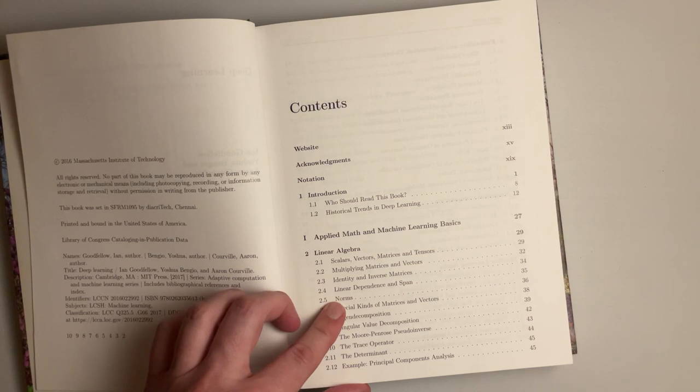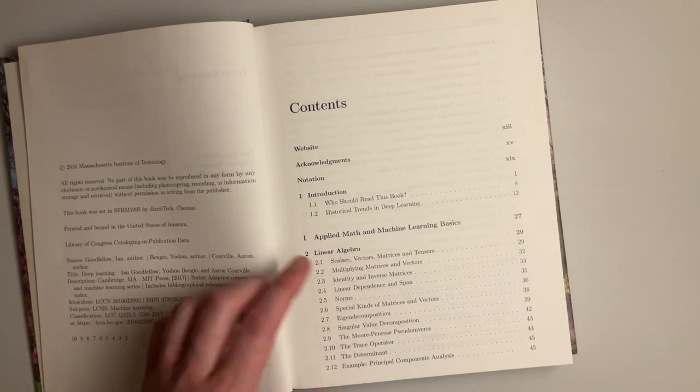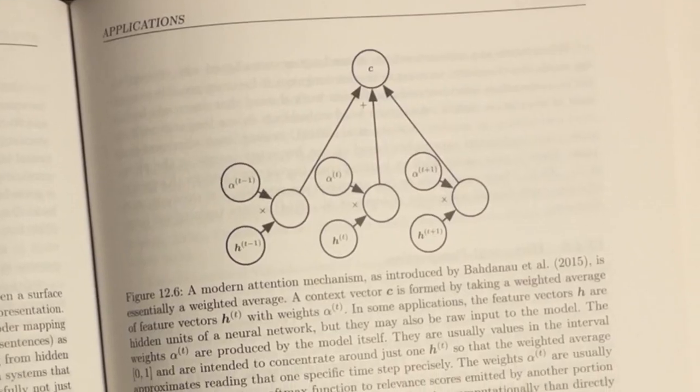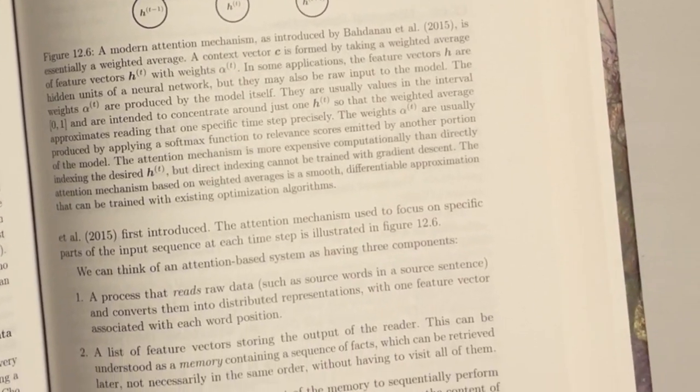For example, when a statistician uses the word inference, they mean how little n generalizes to big n. In deep learning, inference is what a statistician would call prediction. Another example is the word bias.